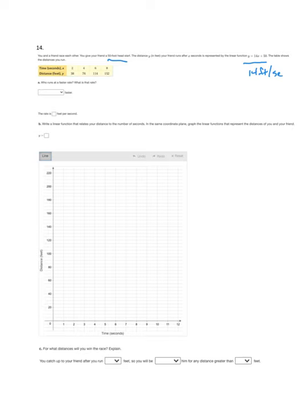For you, every time the x increases by 2, the y is increasing by 38. So our slope is 38 over 2 or 19. So you're running at 19 feet per second. So who's running faster? You are. The rate is 19 feet per second.